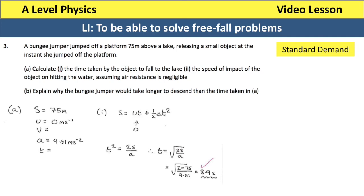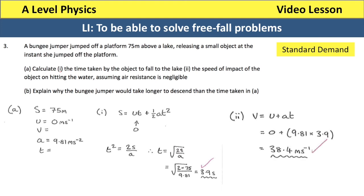We now find the speed of impact of the object on hitting the water, assuming air resistance is negligible. Using V equals U plus AT — you could also use V squared equals U squared plus 2AS, you would get the same answer. U was zero so all we do is 9.81 multiplied by 3.9, giving the correct answer of 38.4 metres per second. Depending on how you rounded 3.9 that might affect this answer, but you should get about 38.4.